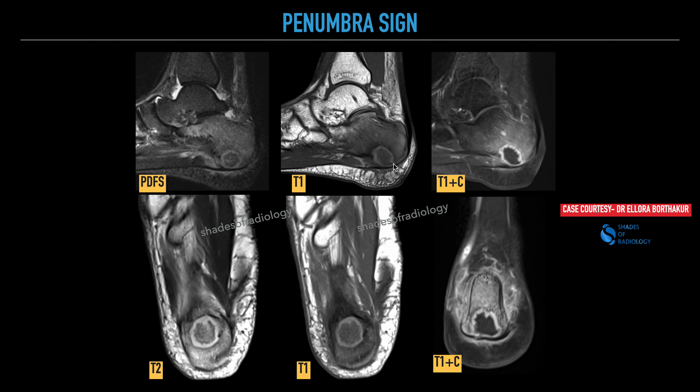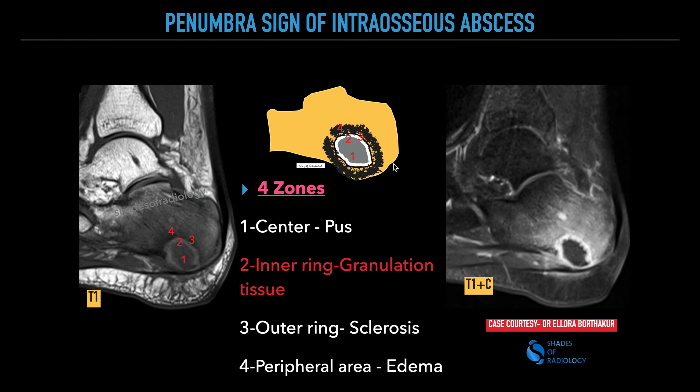This is a classic case of penumbra sign indicative of intraosseous abscess. Let us see what the penumbra sign of intraosseous abscess is. There are four zones in case of intraosseous abscess indicating a penumbra sign. This sign is mainly described on T1 weighted imaging sequence.